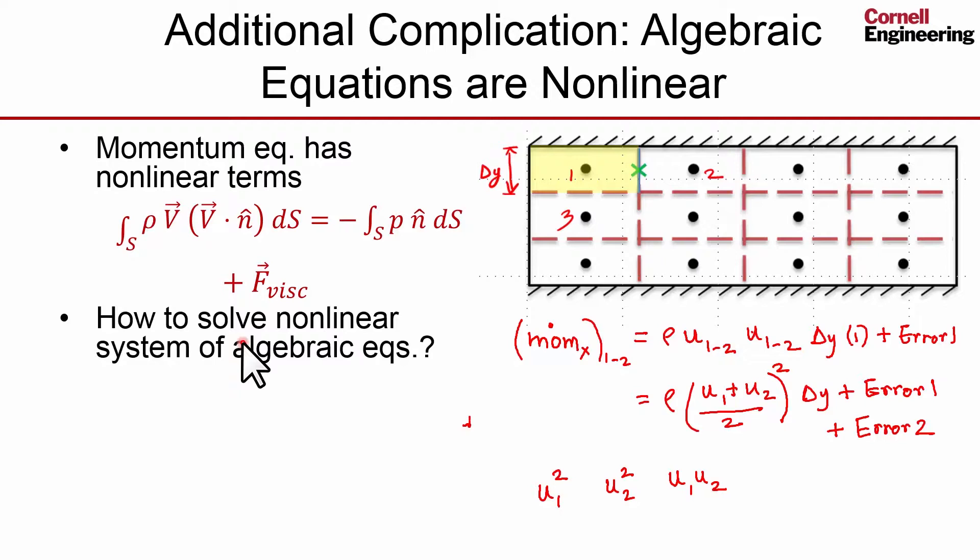So, then the question is, how to solve a nonlinear system of algebraic equations? This is done by linearizing the nonlinear terms about guess values. So one would linearize u1 squared about a guess value of u1 and so on. And then solving iteratively, updating the guess at each time. And when the iterations converge, we have a reasonably good solution to the set of nonlinear system of algebraic equations.